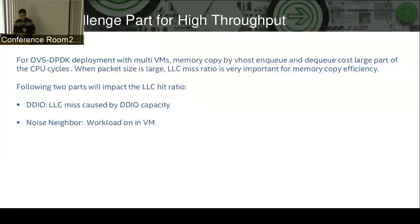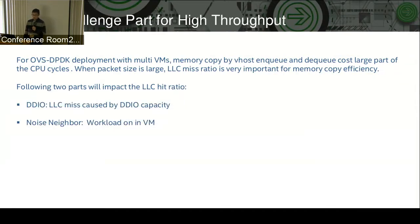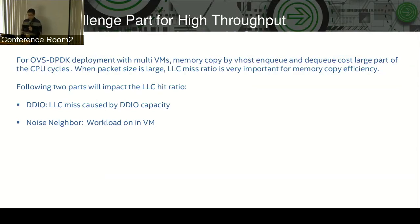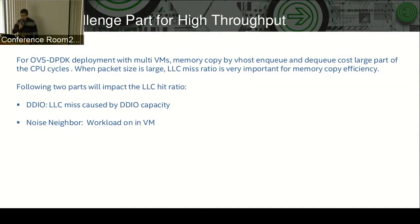When we have Multi-VMs, we must do memory copy between hosts and VMs. The memory copy efficiency for the virtio enqueue and dequeue operation is very important. We think the LLC miss ratio is very important for memory copy, and we think the following two parts will impact the performance: the first is DDIO, and the second is the noisy neighbor.